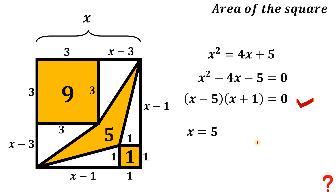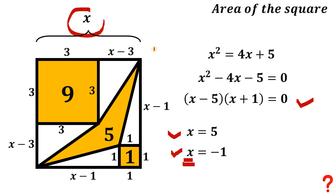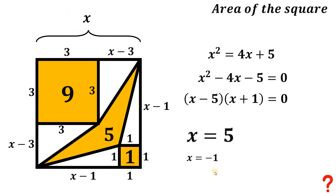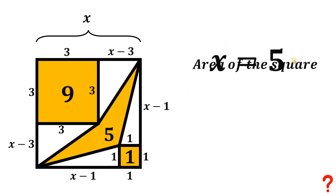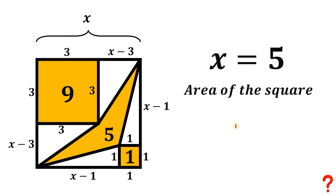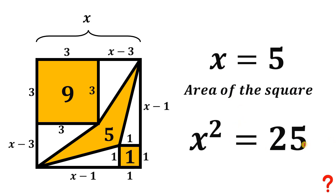We have two possible values for x — so which one is correct? Can x be equal to negative 1? Of course, this is impossible because x is a side length of this square. Therefore x cannot be equal to negative 1, so x equals 5. Since x equals 5 and the area of the square is x squared, squaring both sides gives x squared equals 25.